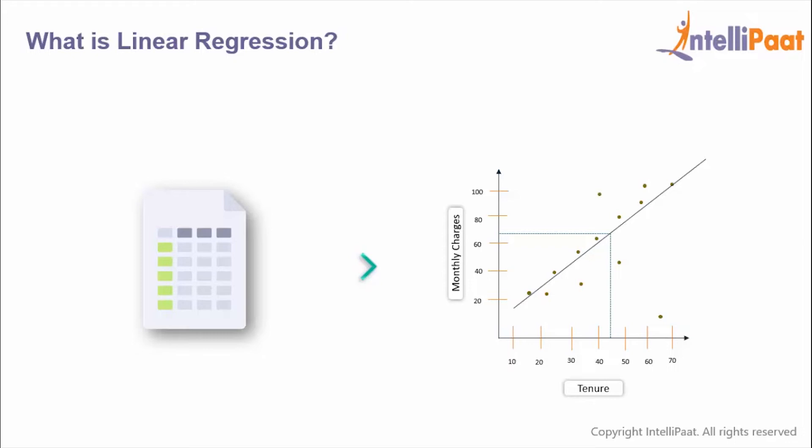So let's say the tenure of the customer is 45 months, then with the help of the best fit line, he can predict that his monthly charges would be somewhere around 64 dollars. Similarly, if the customer's tenure is 69 months, then his monthly charges would be around 110 dollars.